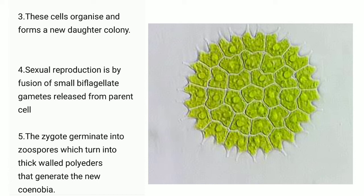Point 4: Sexual reproduction is by fusion of small biflagellate gametes released from parent cells. Point 5: The zygote germinates into a zoospore, which turns into thick-walled polyeders that generate a new coenobium. The coenobium is an arranged colony of algae which acts as a single organism.